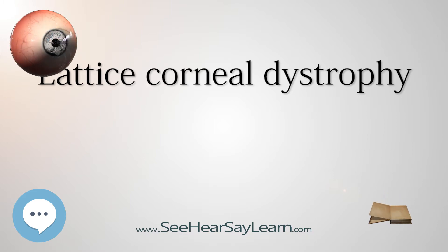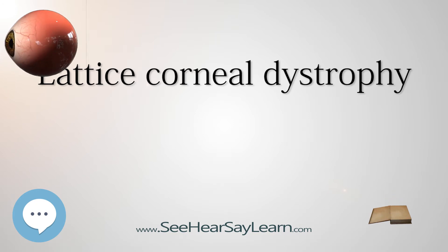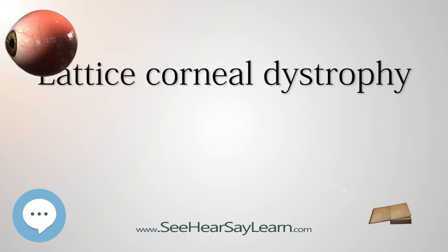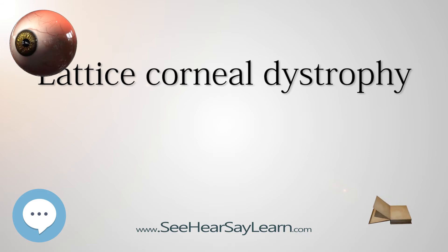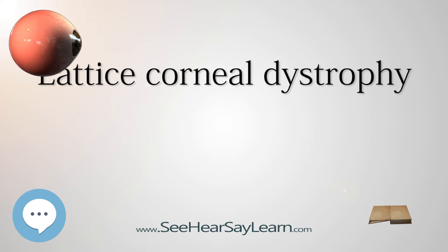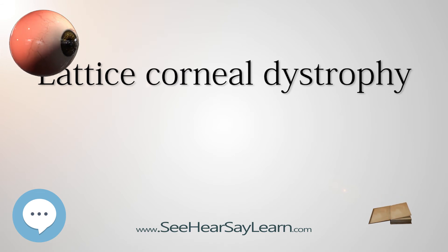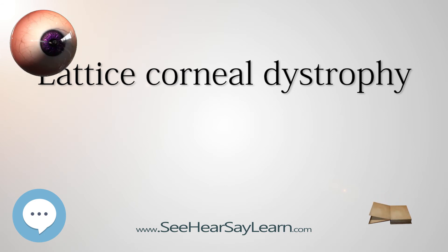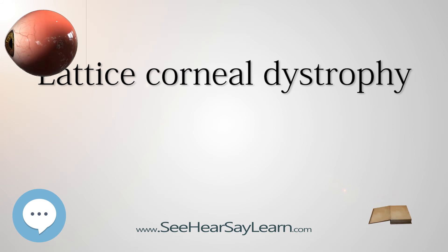By about age 40, some people with lattice dystrophy will have scarring under the epithelium, resulting in a haze on the cornea that can greatly obscure vision. In this case, a corneal transplantation may be needed. There have been many cases in which teenage patients have had the procedure, which accounts for the change in severity of the condition from person to person. Although people with lattice dystrophy have an excellent chance for a successful corneal transplantation, the disease may also arise in the donor cornea in as little as 3 years.